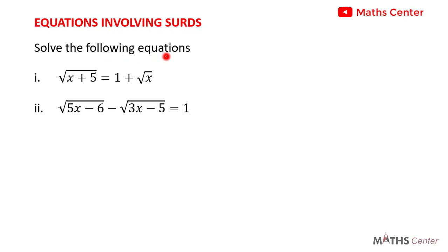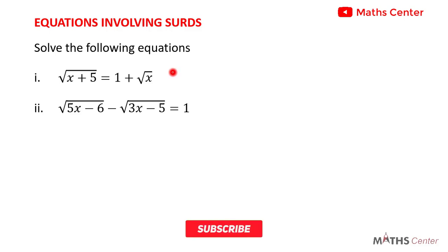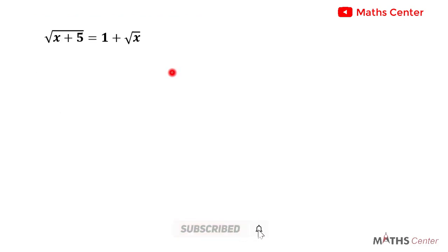Solve the following equations. These are equations involving radicals. Let's begin with the first one: the square root of x plus 5 is equal to 1 plus the square root of x.